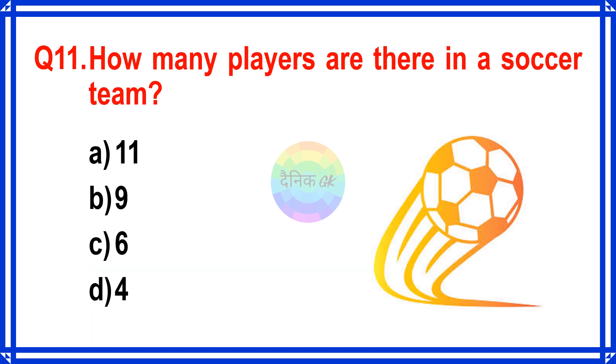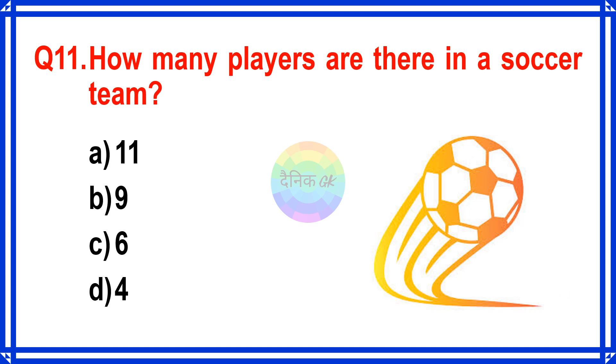How many players are there in a soccer team? The correct answer is Option A. 11.